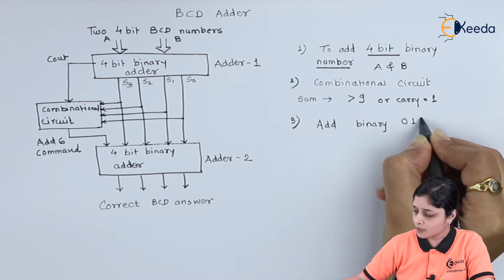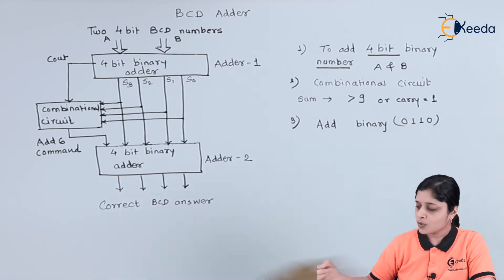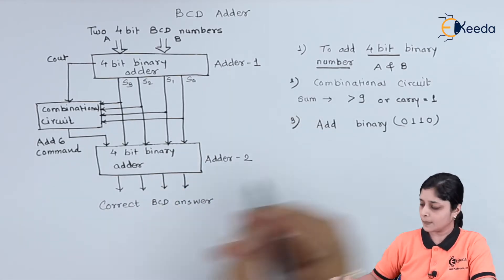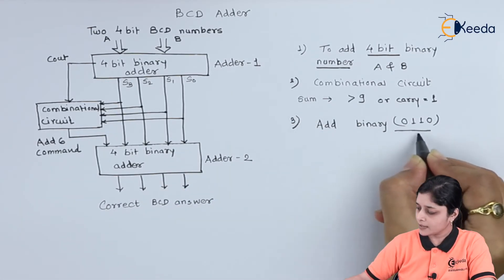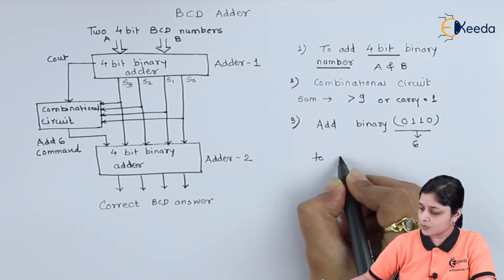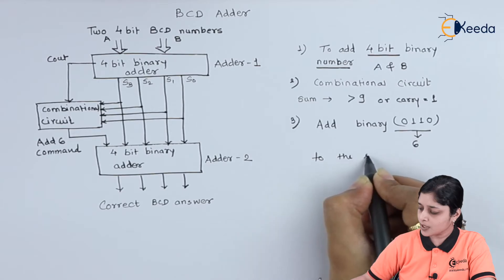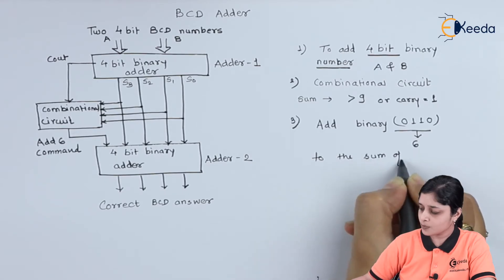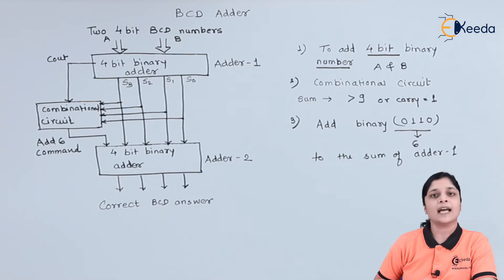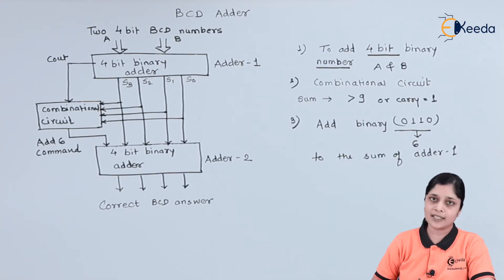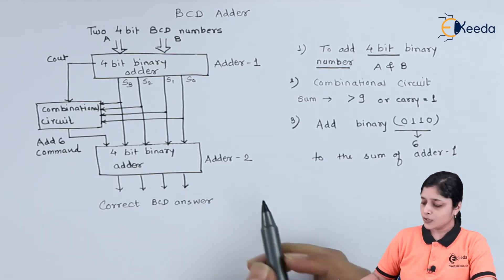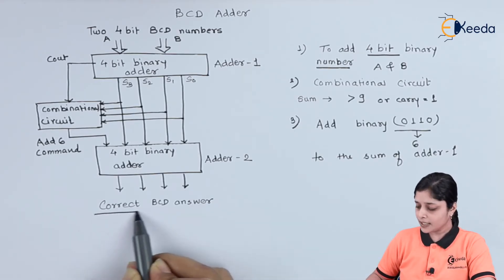That is 0110 — which is six — to the answer of Adder One. You add this to the sum of Adder One, and then only you will get your final answer in terms of BCD numbers.